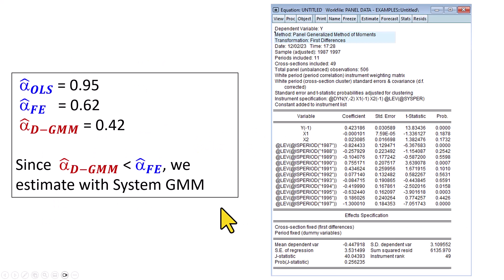So to demo this, the dataset that I'm using here gives us the coefficients of the lagged dependent variable to be 0.42, which as you can see is less than that from fixed effects. And that's why we're going to go with system GMM in the estimation.